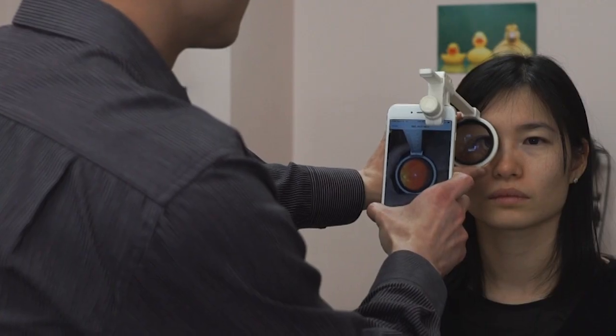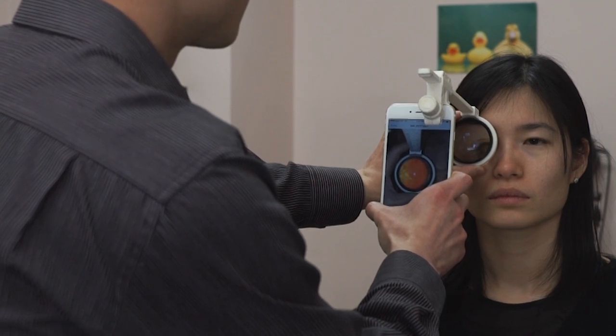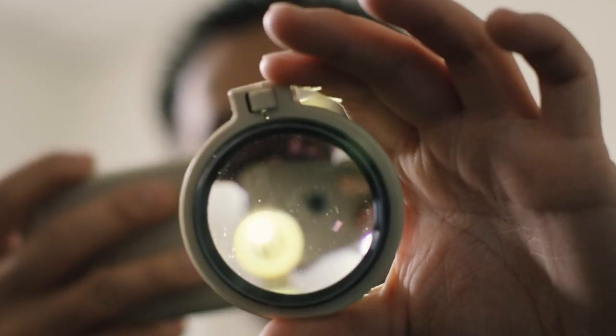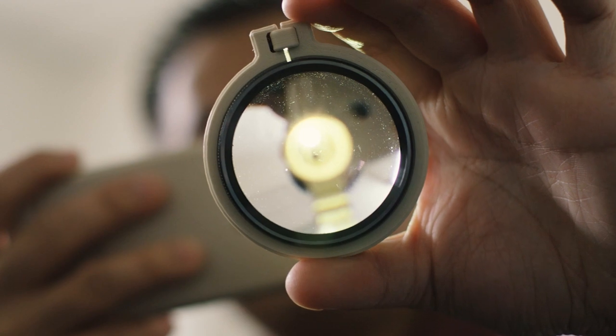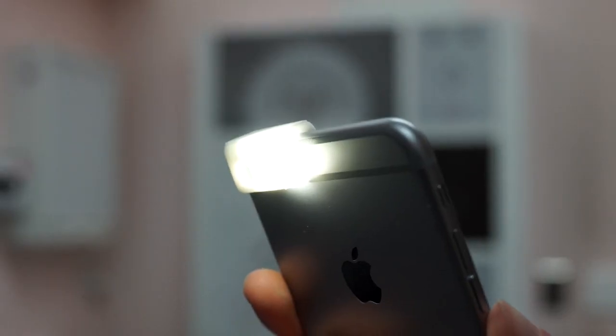The OdysSight fundus is a typical example of this concept. It can be used in conjunction with commonly available 20D lenses and a smartphone. All you have to do is to secure the device on your smartphone and you have yourself a fundus camera or an anterior segment microscope.